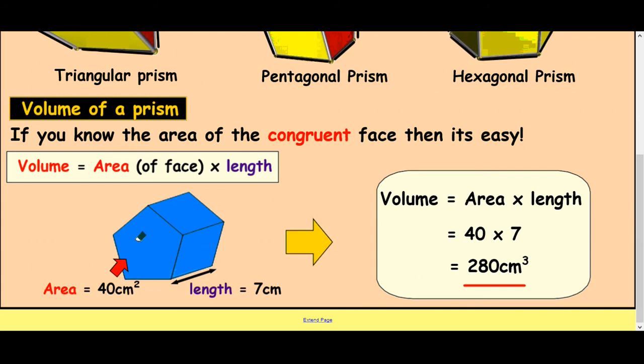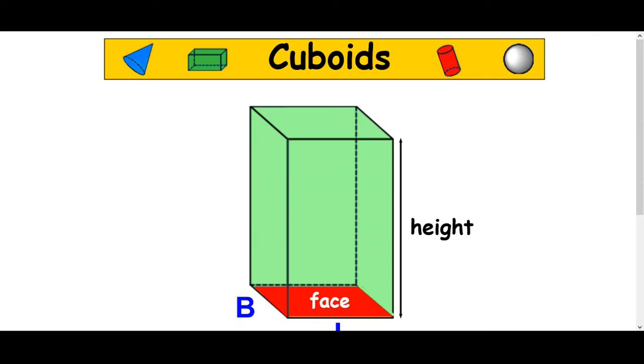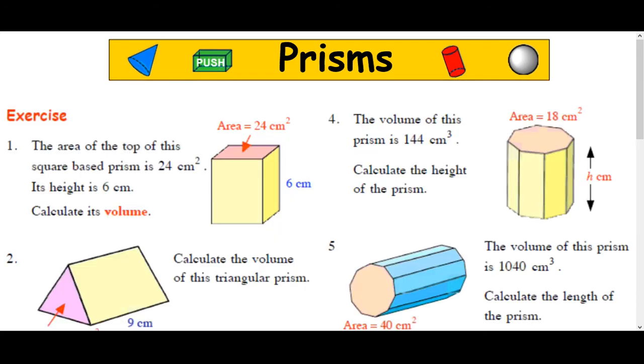So as long as you know the area of the face part, and you know the length or the height of the prism, then you can work out the volume of it. So let's look at some more examples here I've got on this page here.